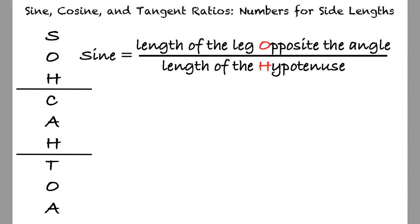Sine is the length of the leg opposite the angle over the length of the hypotenuse.